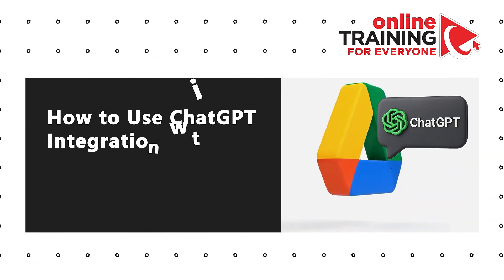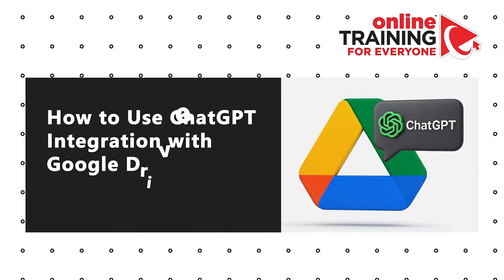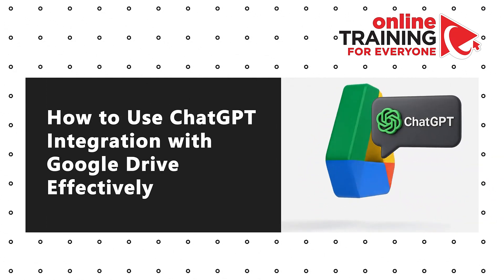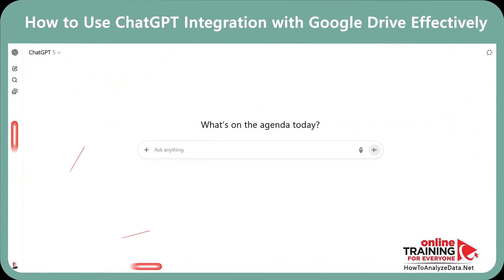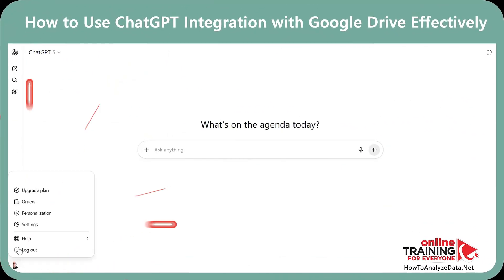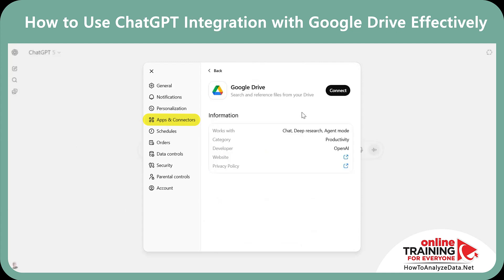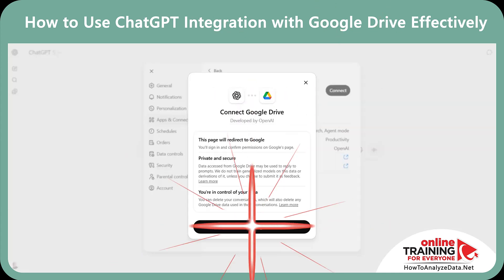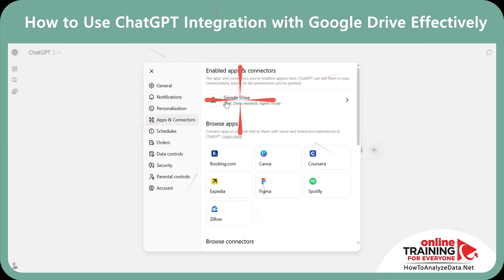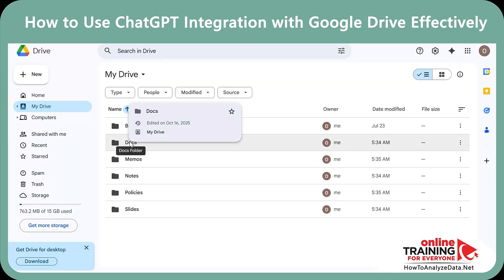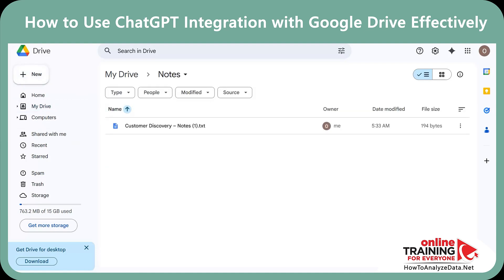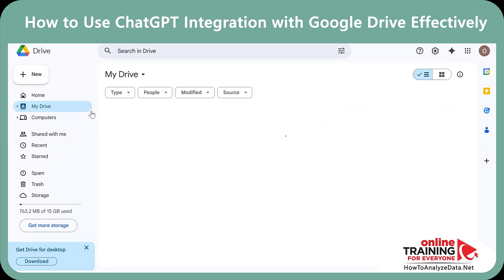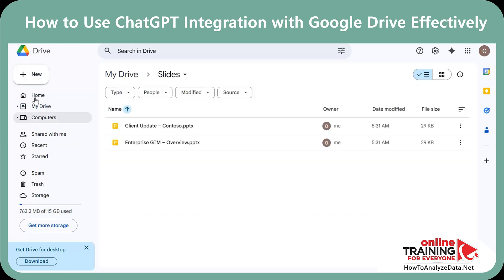Here's how to use ChatGPT with Google Drive integration to solve common headaches and save time. To add the Google Drive connector, navigate to Settings, Connectors, Google Drive, and click Connect. Once the connection is established, ChatGPT has access to all the files and folders on your Google Drive, and you can search, cite, and summarize your files directly in chat without hunting through folders.